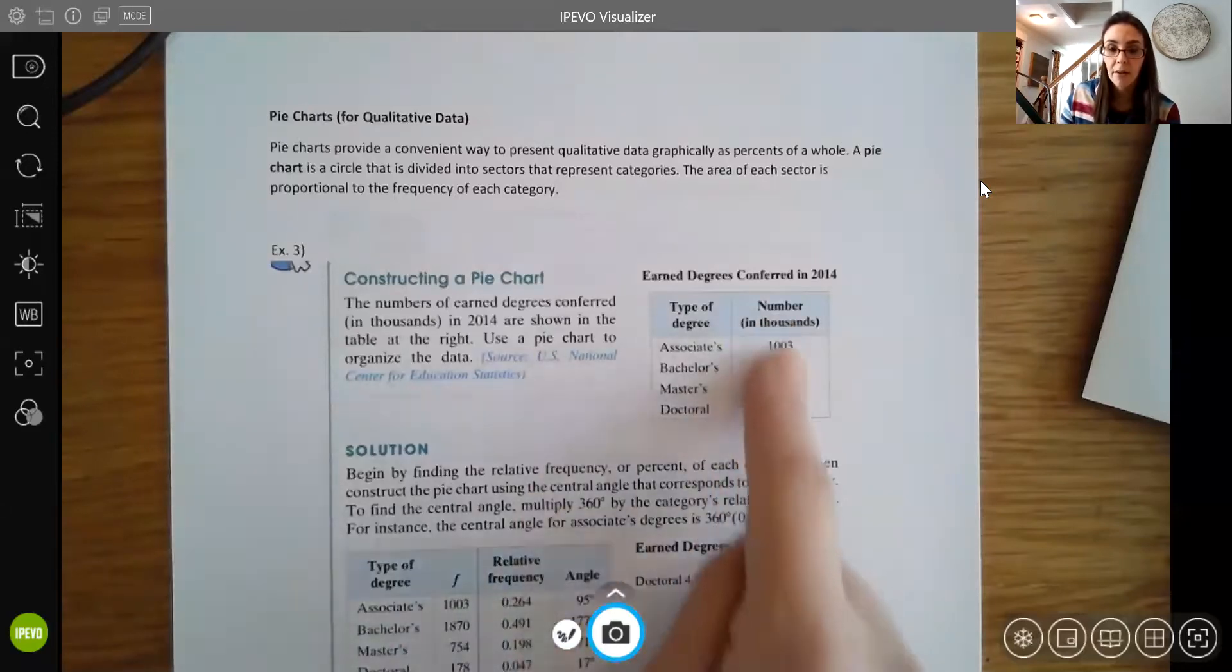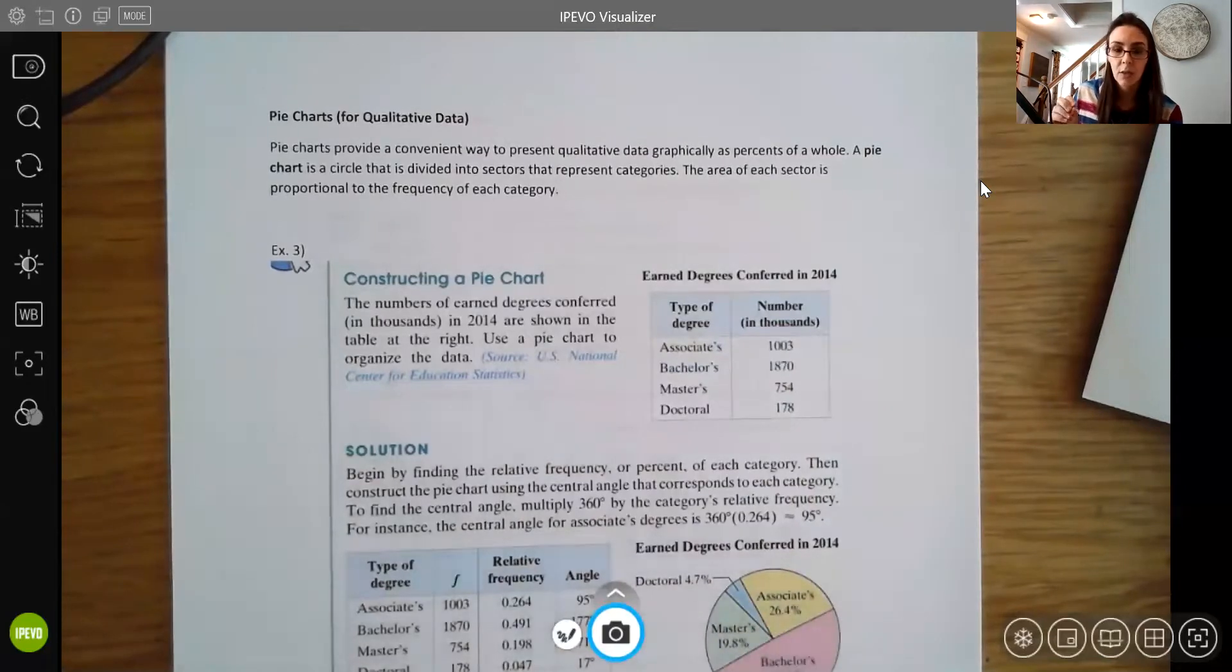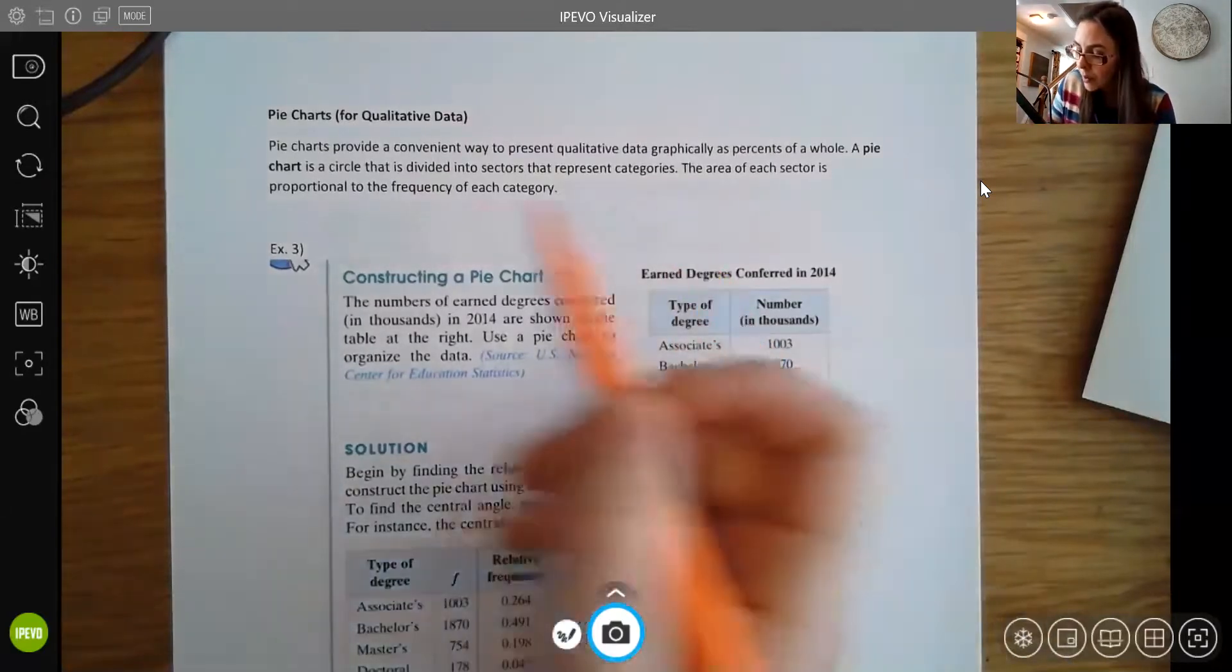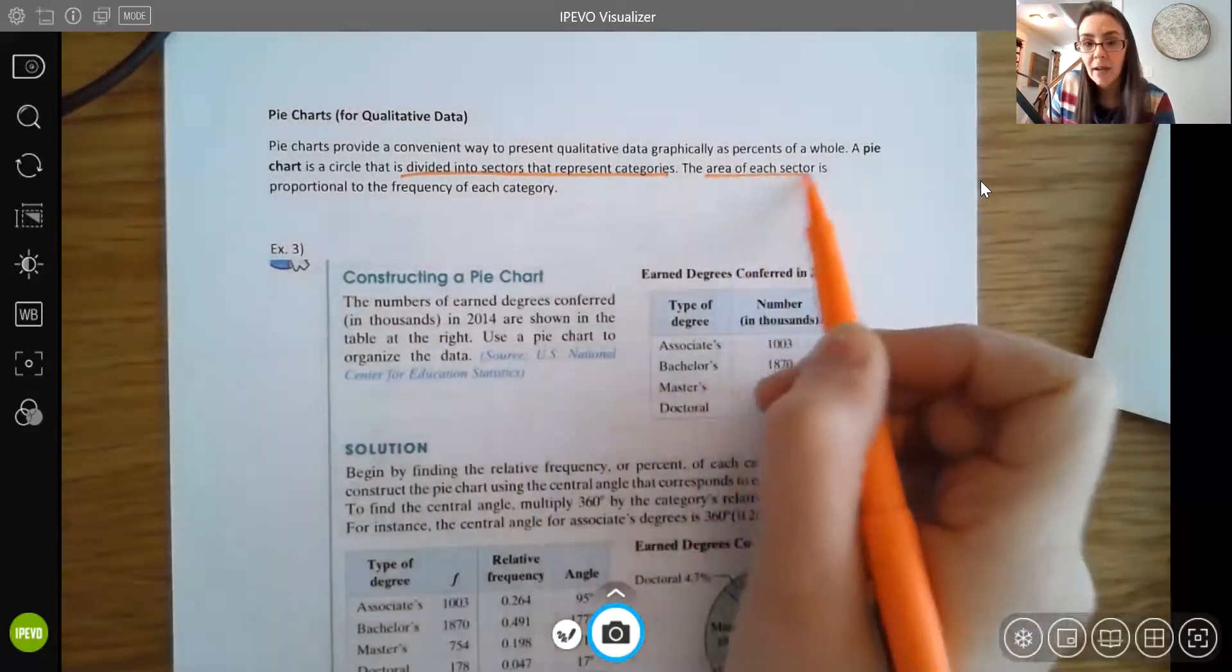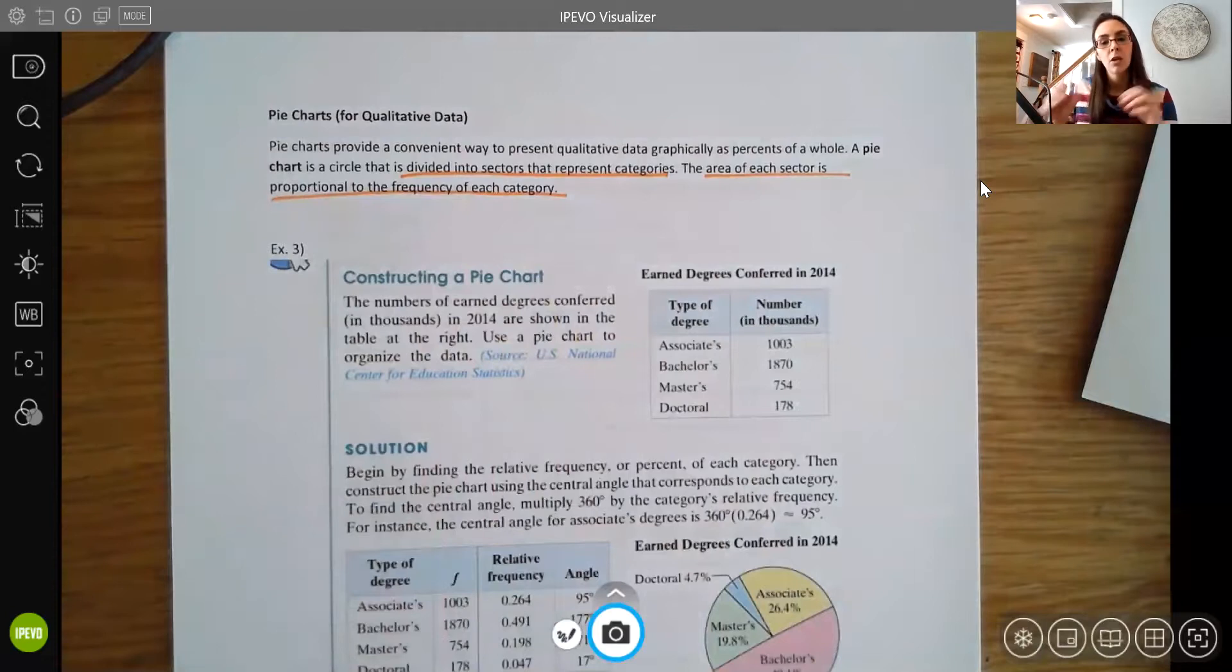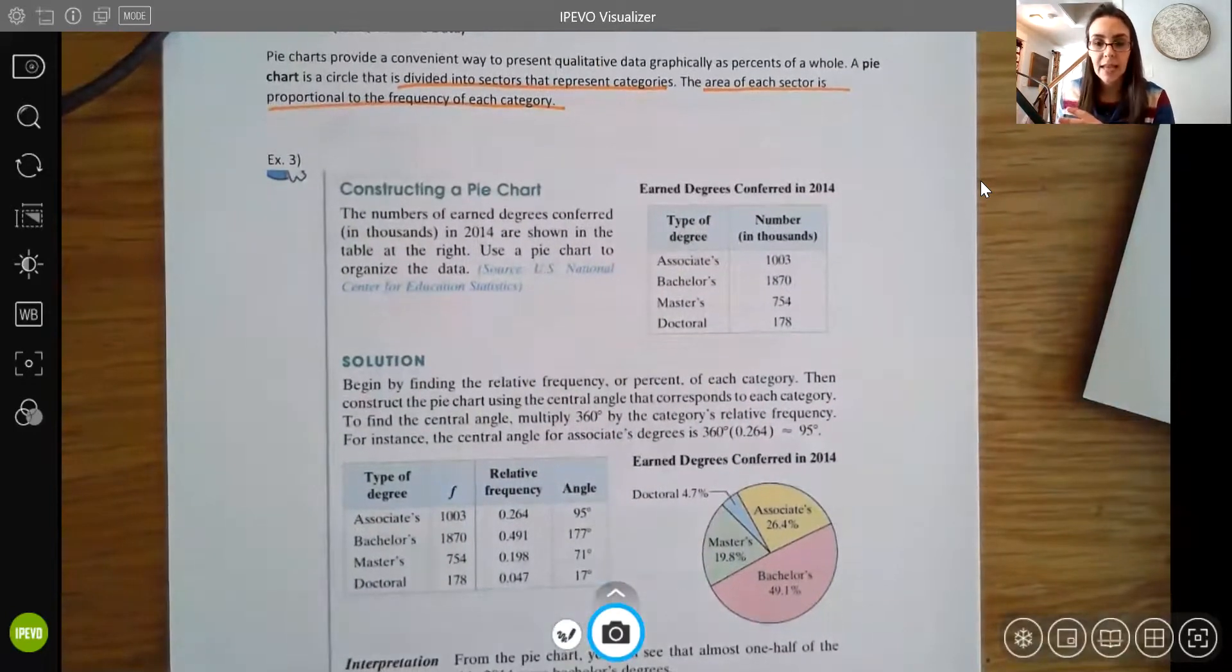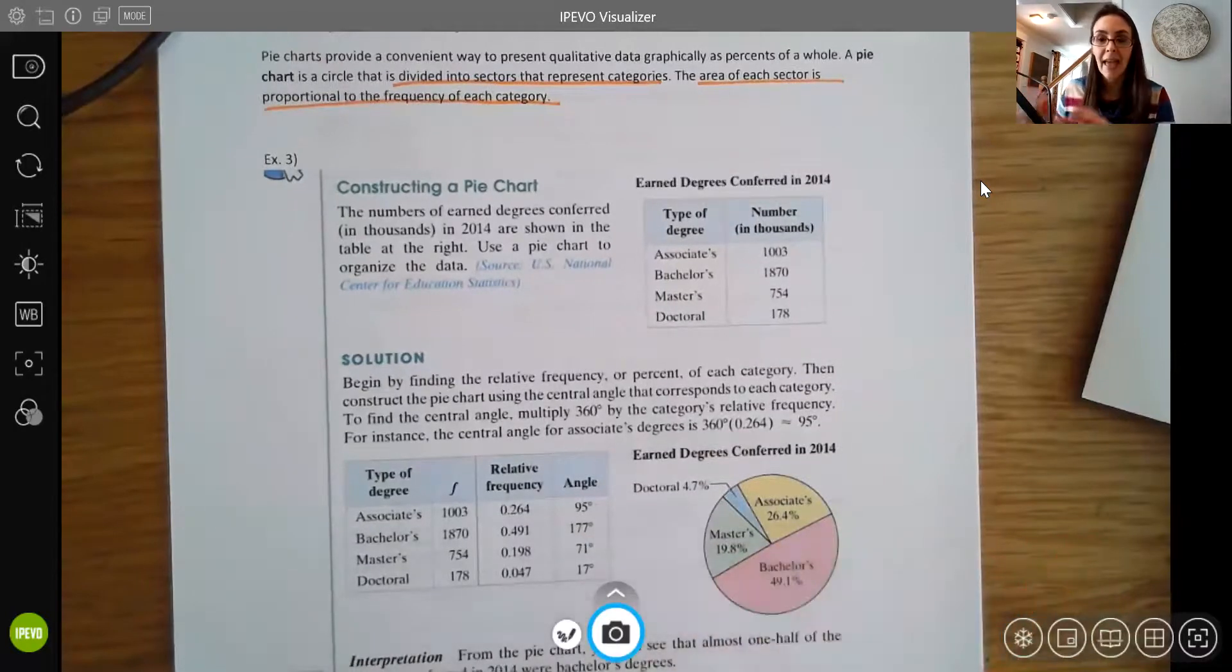And we typically use percentages here. So instead of just listing the raw values, which we do have in our chart or our pie chart or our circle graph, we use the percentages, so those relative frequencies instead. And there's a few things you need to know. So a pie chart is a circle that's divided into sectors that represent categories. And the area of each sector is proportional to the frequency of the category. So that means that the size should match with the percent. So in this example here, notice that the percent for those who have bachelors is around 49%, which is about 50%, right? And 50% of 100% is half. So you're noticing that that segment there is almost half the size of the circle.